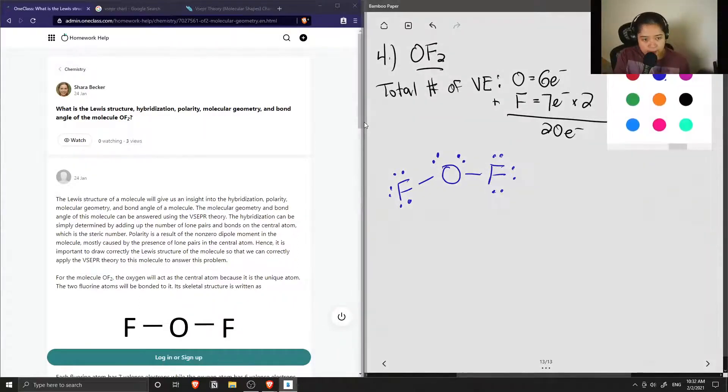This is the final Lewis structure of this molecule. Now we need to find out its hybridization, polarity, molecular geometry, and bond angle. First let's focus on its shape, bond angle, and hybridization. If we analyze the central atom, which is the oxygen, we'll see that the oxygen has two lone pairs and two bonded atoms.